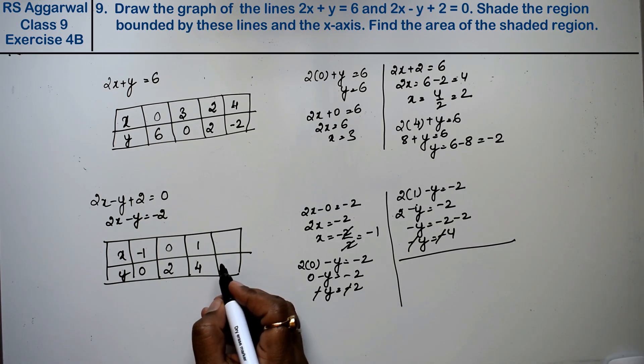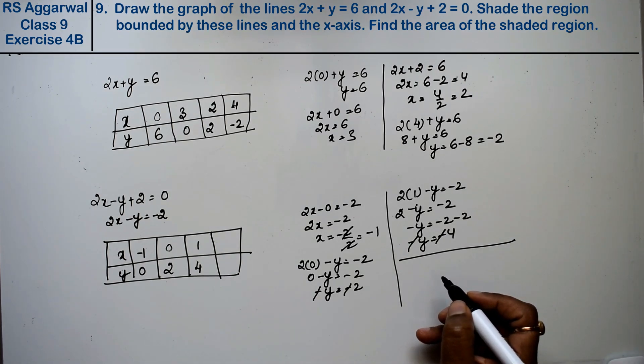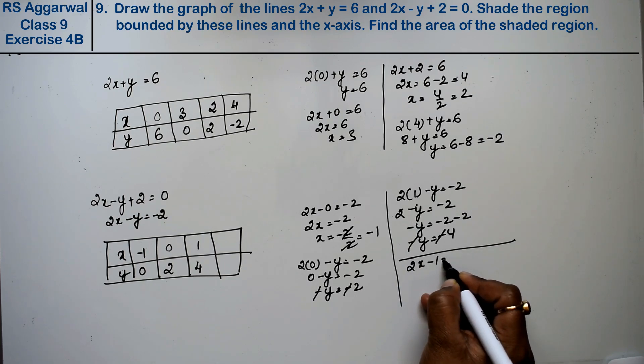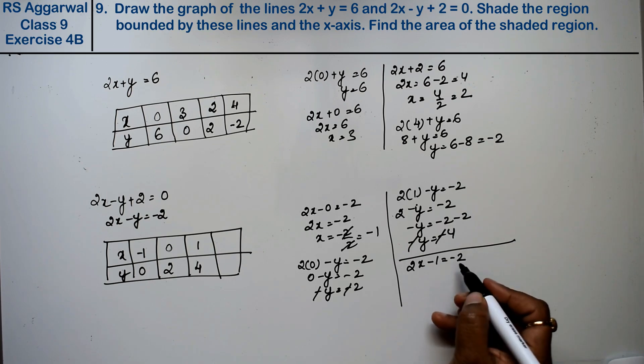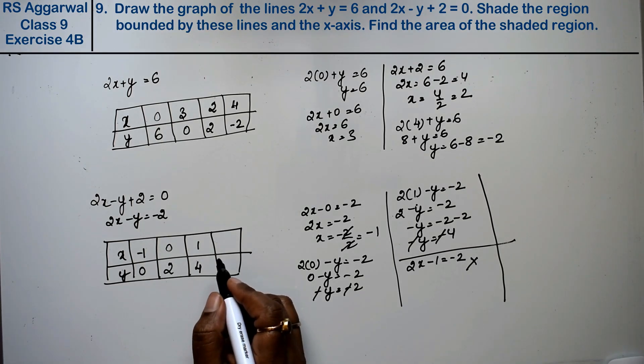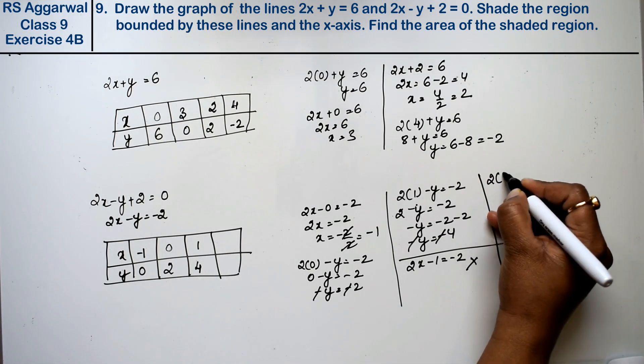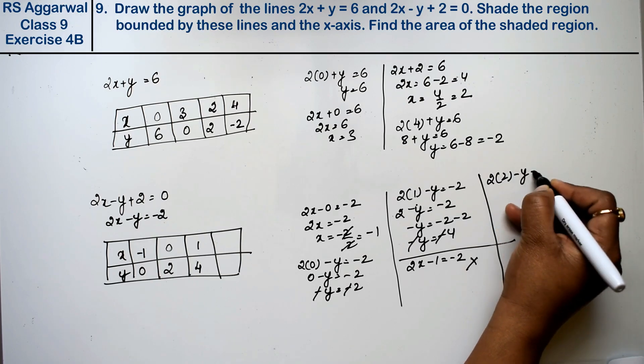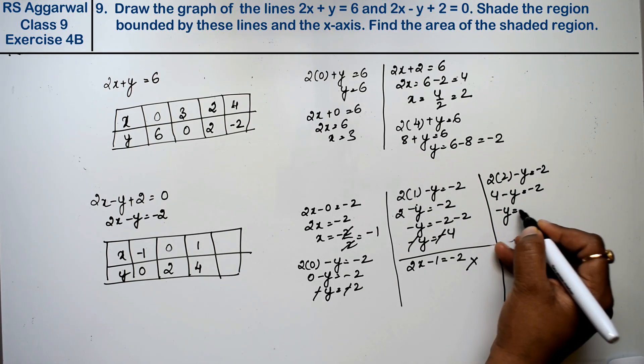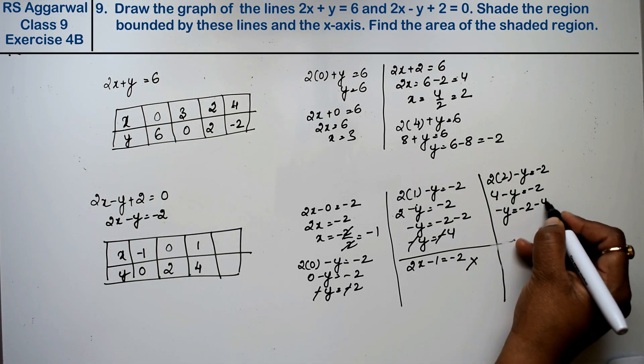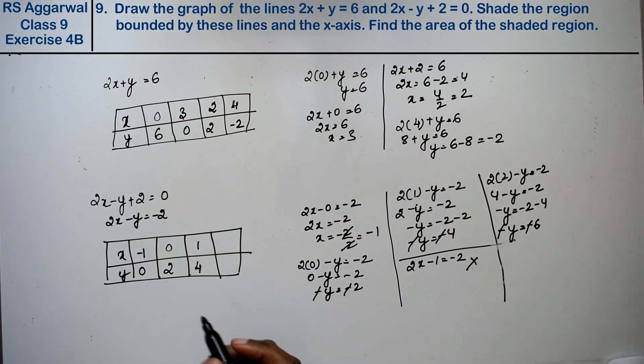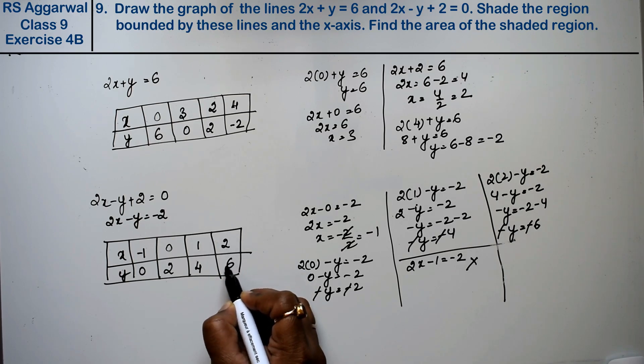If y is 1, then 2x minus 1 equals minus 2. We won't be able to keep that. So if x's value is 2, let's see: 2 times 2 minus y equals minus 2, so 4 minus y equals minus 2. Minus y equals minus 6, minus minus cancel, so if x is 2 then y is 6.